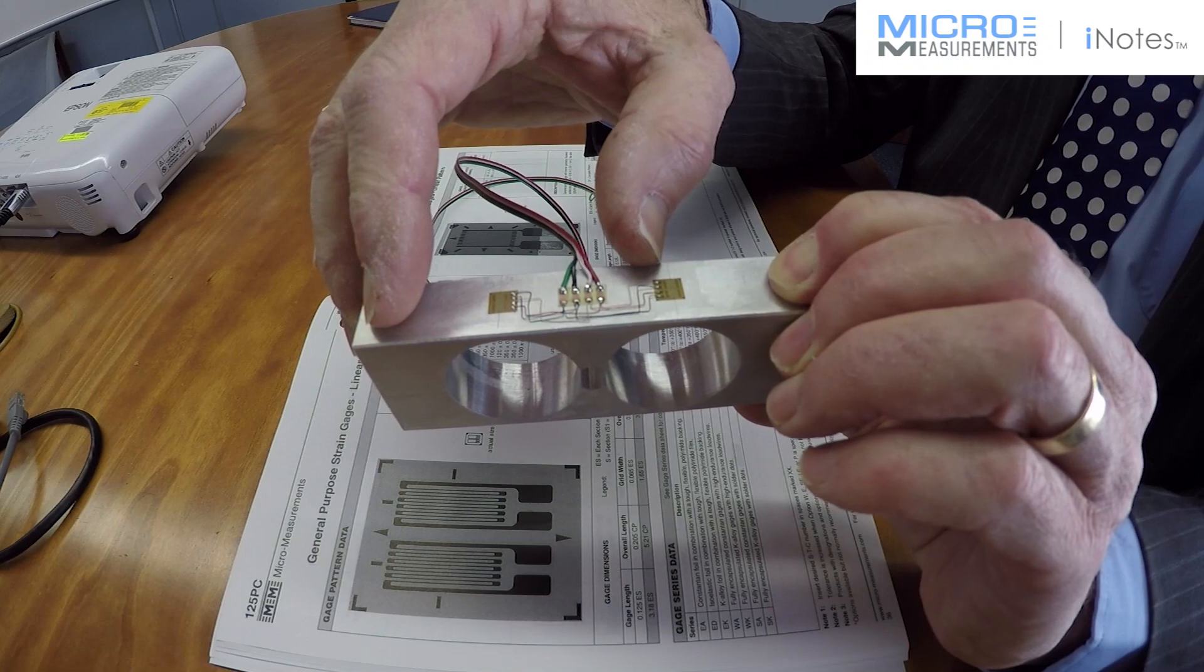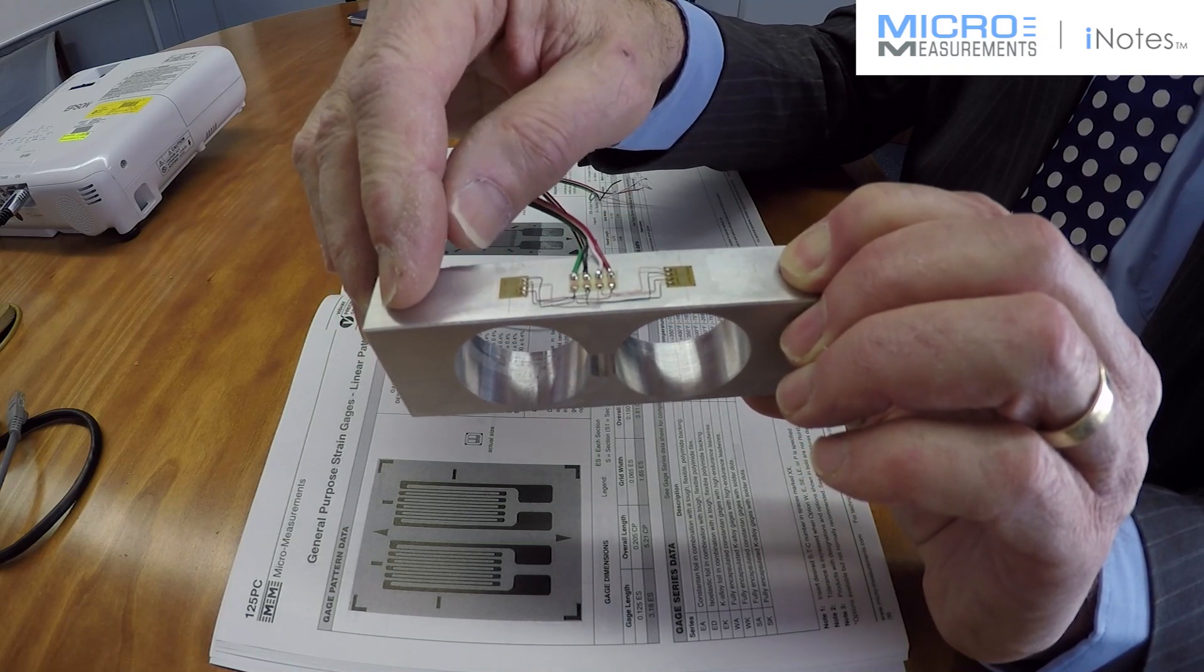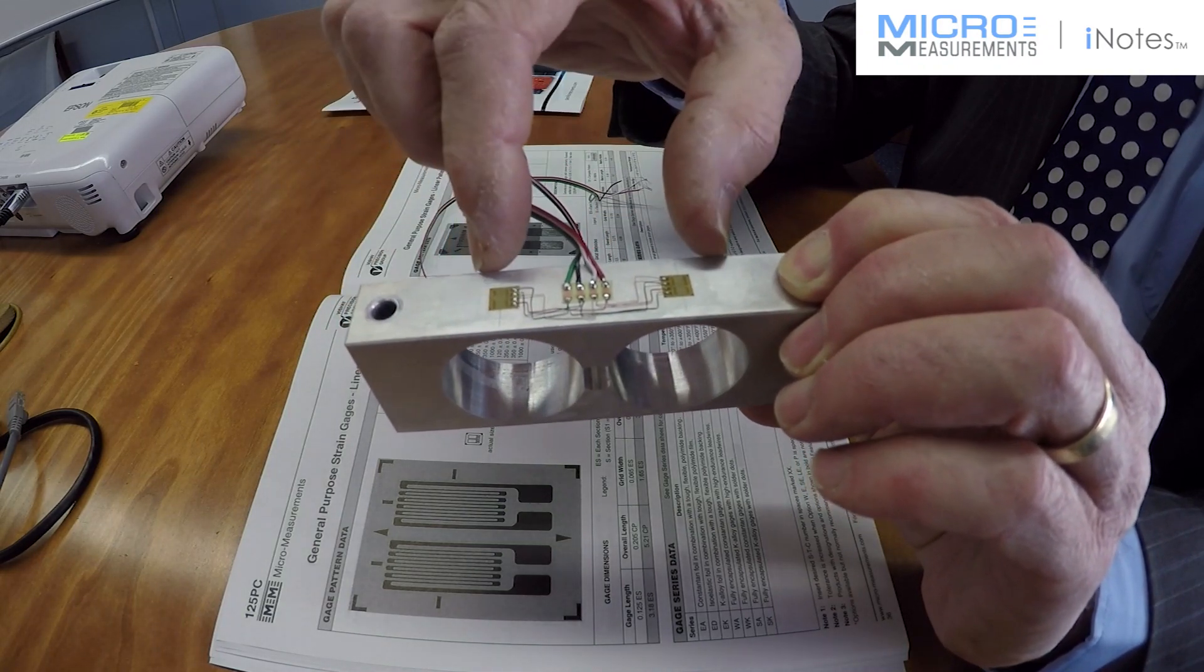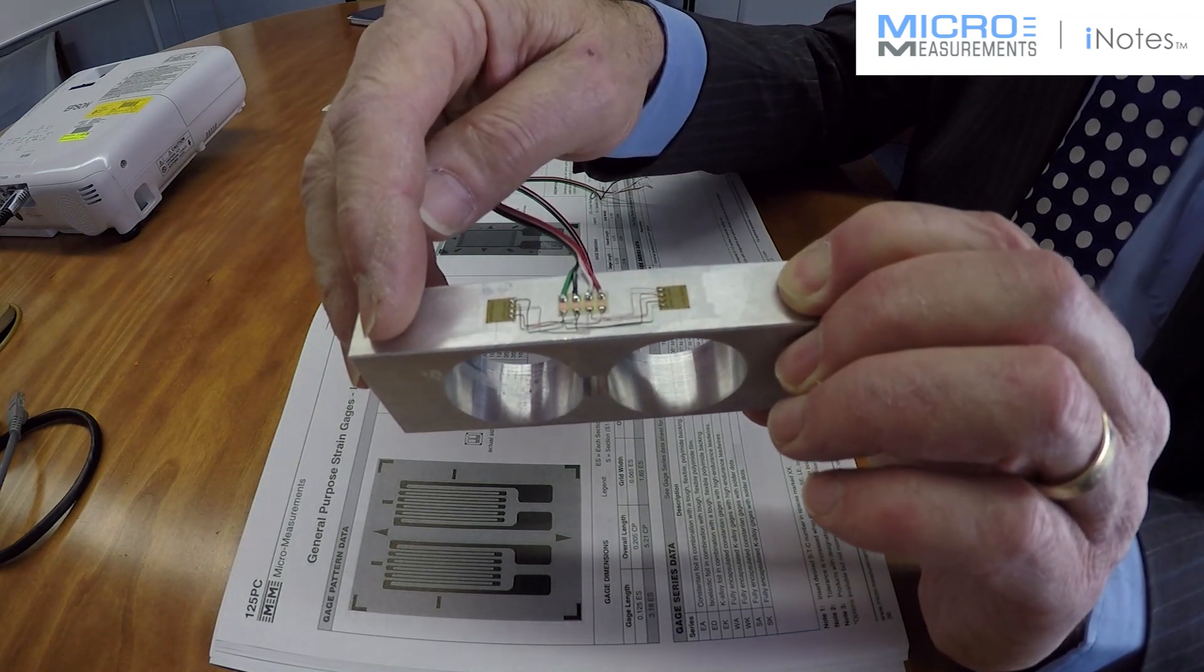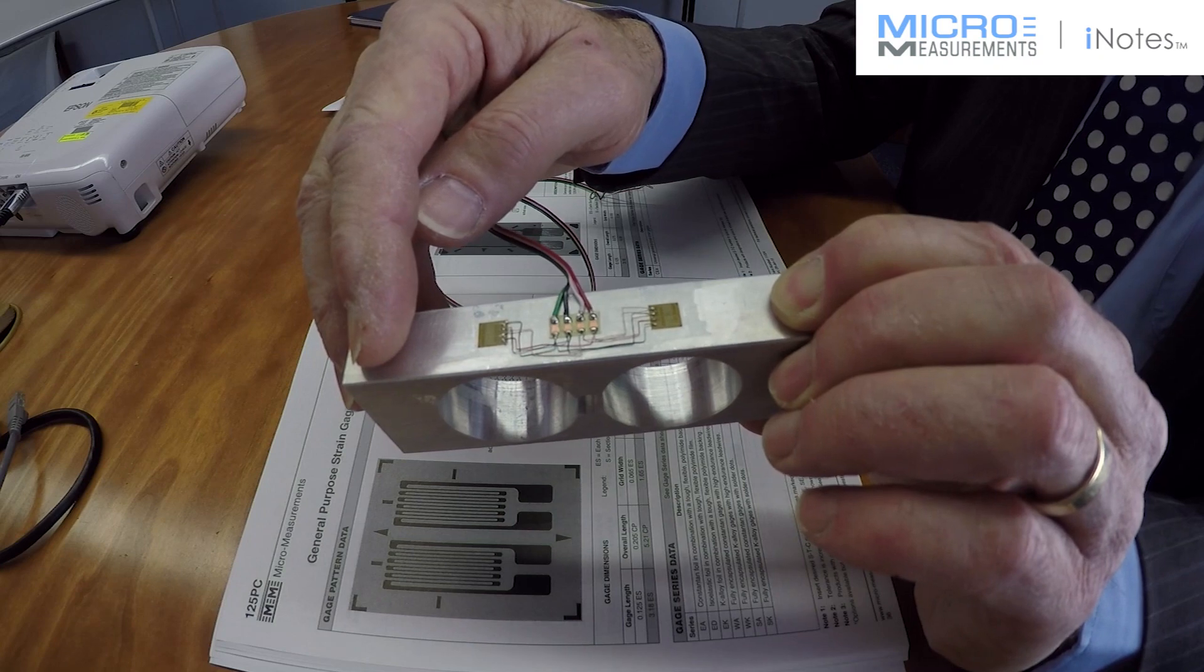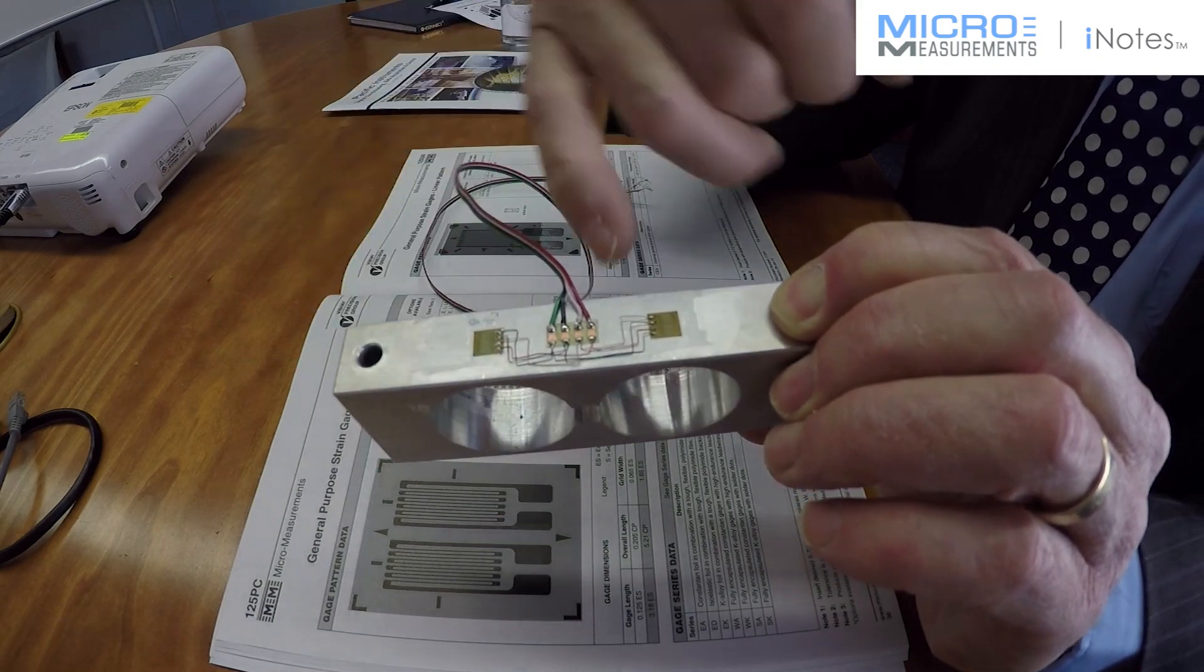This side of the cell will go into tension while this side of the cell goes into compression by the same amount. That will give us two opposites which will in a Wheatstone bridge as this is, you will get an output four times the actual surface strain.